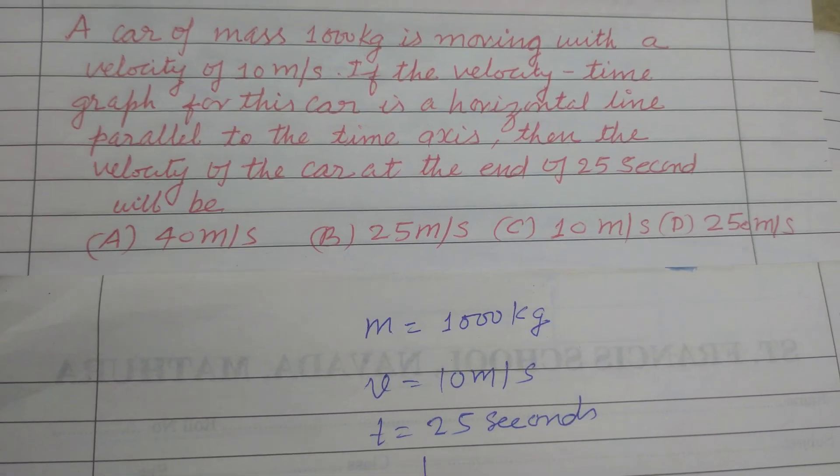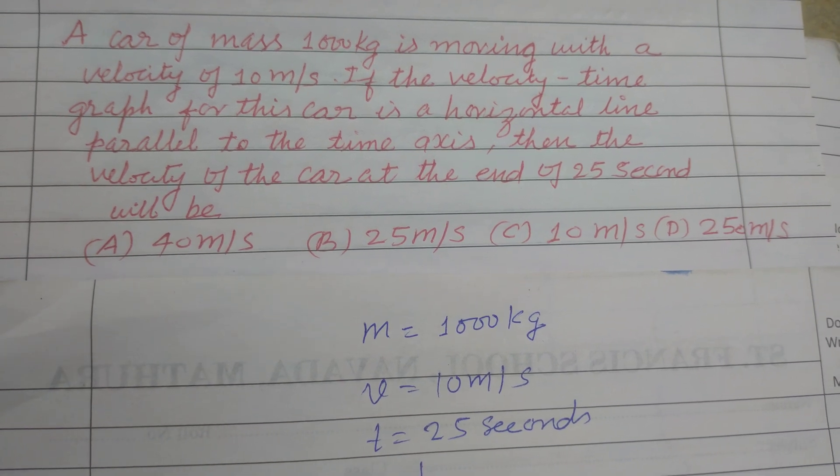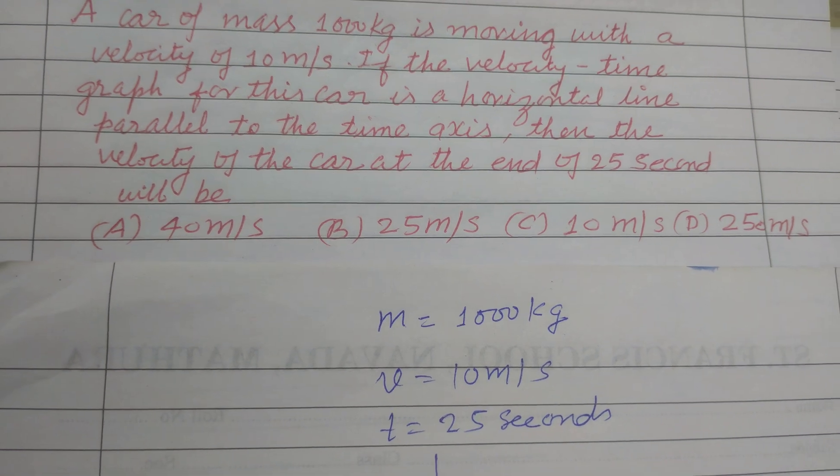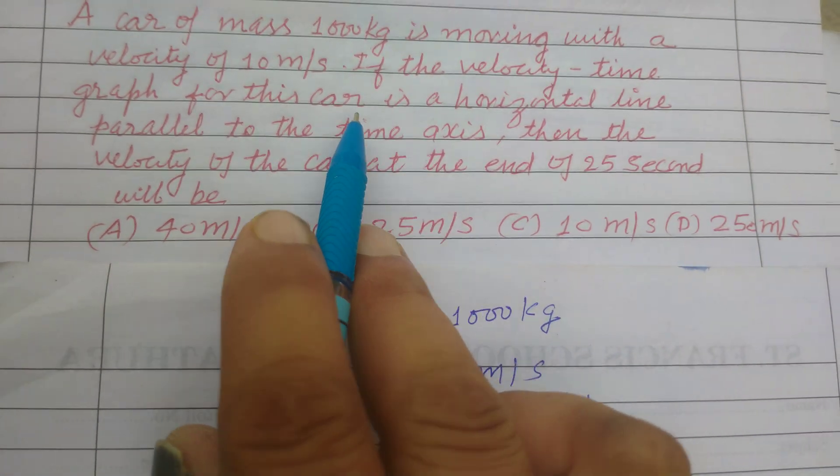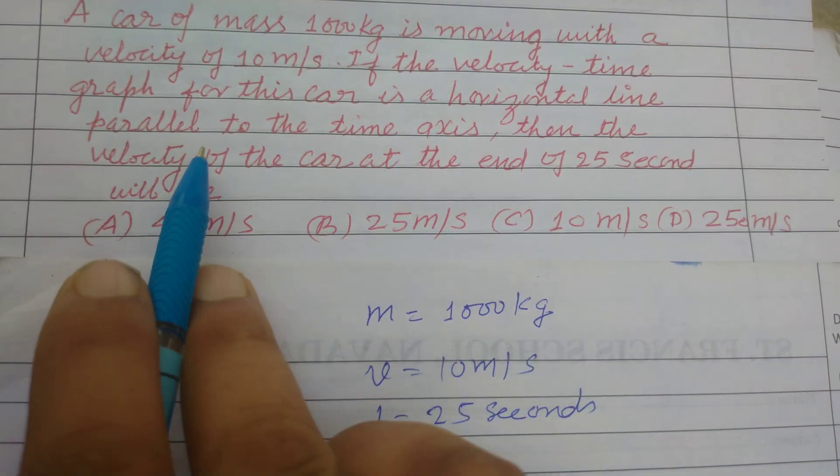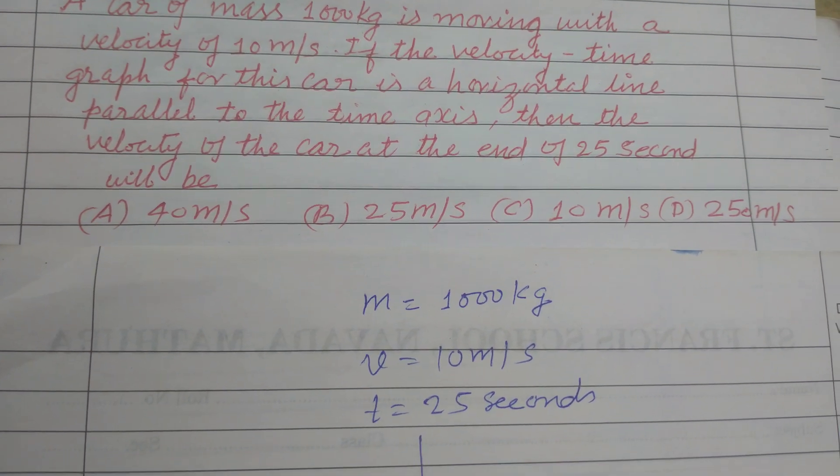And question is saying that the velocity time graph for this car is a horizontal line parallel to time axis.